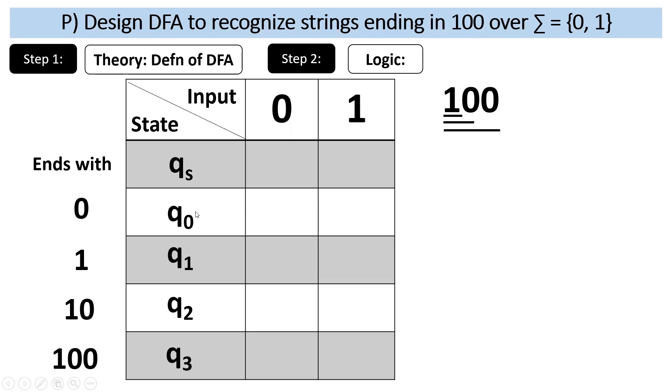Qs and a 0 q0. Qs and a 1 q1. Direct integrals. Easy. Q0 and a 0 q0. Q0 and a 1 q1. Q1 and a 0 q2. Q1 and a 1 q1. Q2 and a 0 q3. Q2 and a 1 q1. Q3 and a 0 q0. Q3 and a 1 q1. Qs is the start state. Q3 is the final state because ending with 1 0 0. And you can merge into q0.